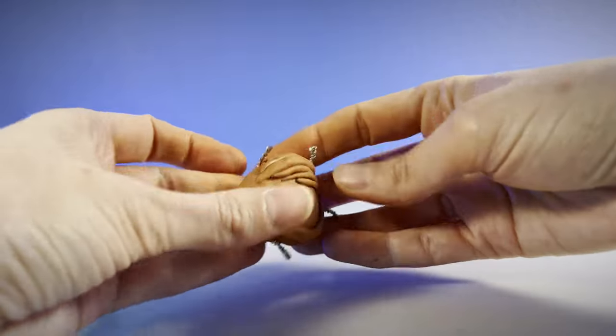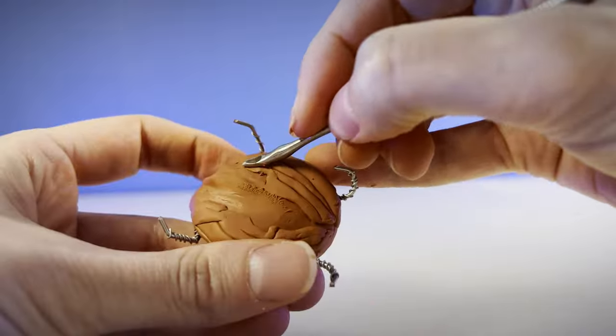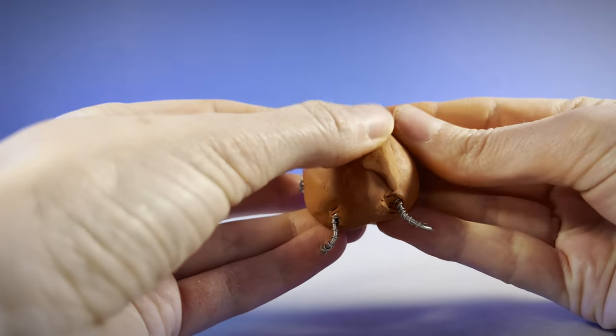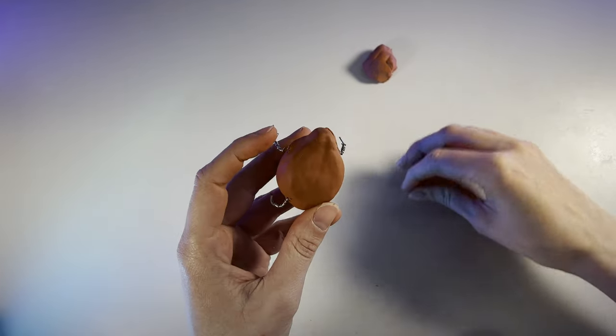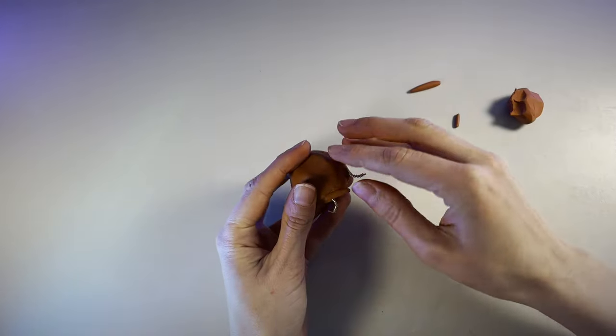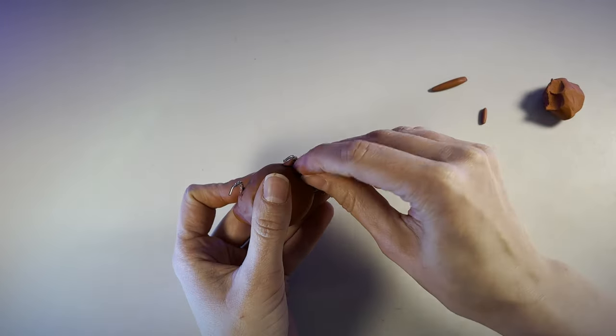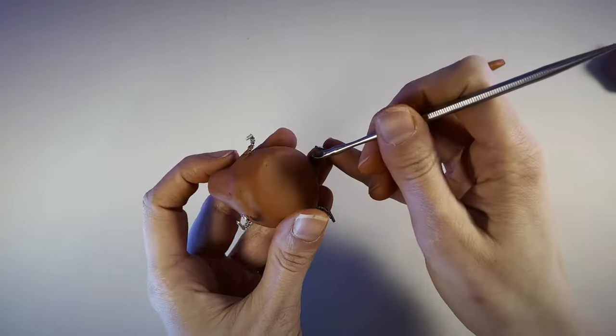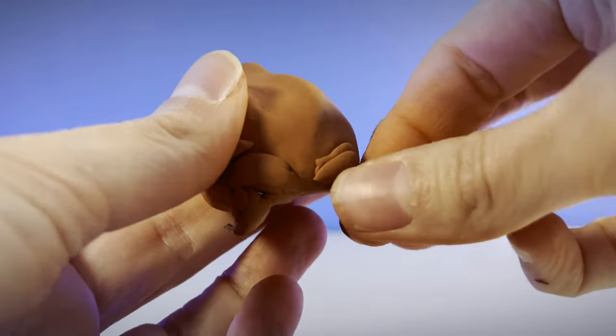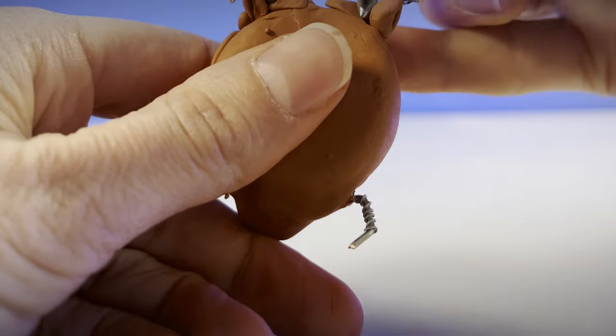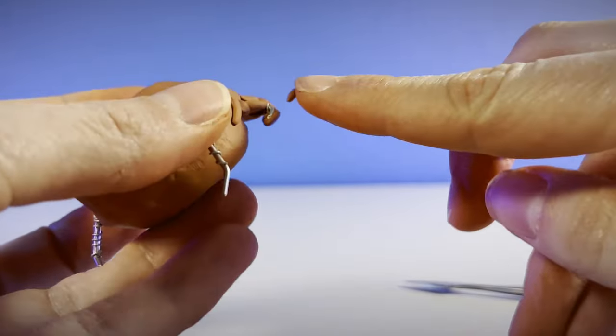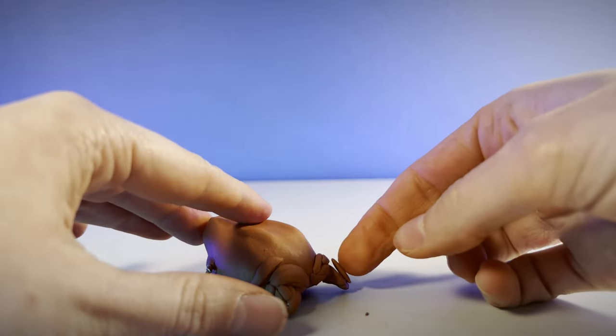In some ways I think epoxy putty is forgiving in that I don't have to worry as much about the construction of it. Yet, on the other hand, I find polymer clay much more forgiving because I can take my time to work out the forms. I'm not racing against the clock before my clay cures because it won't.